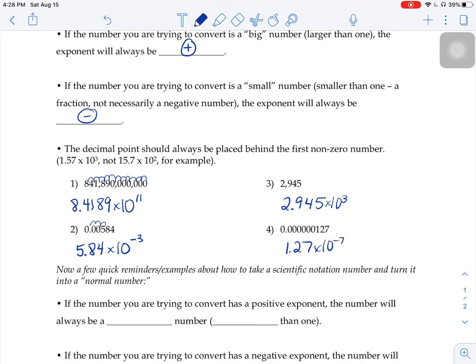You should get 2.945 × 10³. Positive 3rd, because the number you're trying to convert is relatively large, so we get positive exponents. In number 4, our exponent's going to be negative 7, because the number we were trying to convert is on the smaller side.